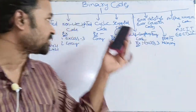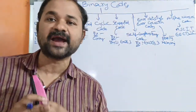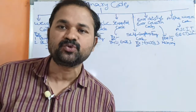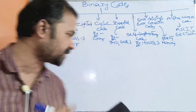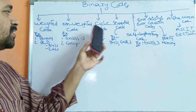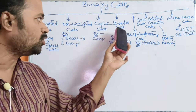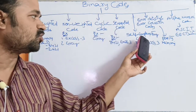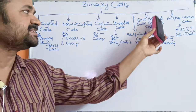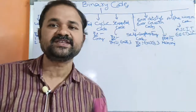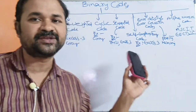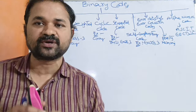Let us discuss about classifications of binary codes. Binary codes are mainly classified into several types: weighted code, non-weighted code, cyclic code, sequential code, self-complementing code, error detection and error correction code, and alphanumeric code. In this video, we are going to discuss about all these codes one by one.